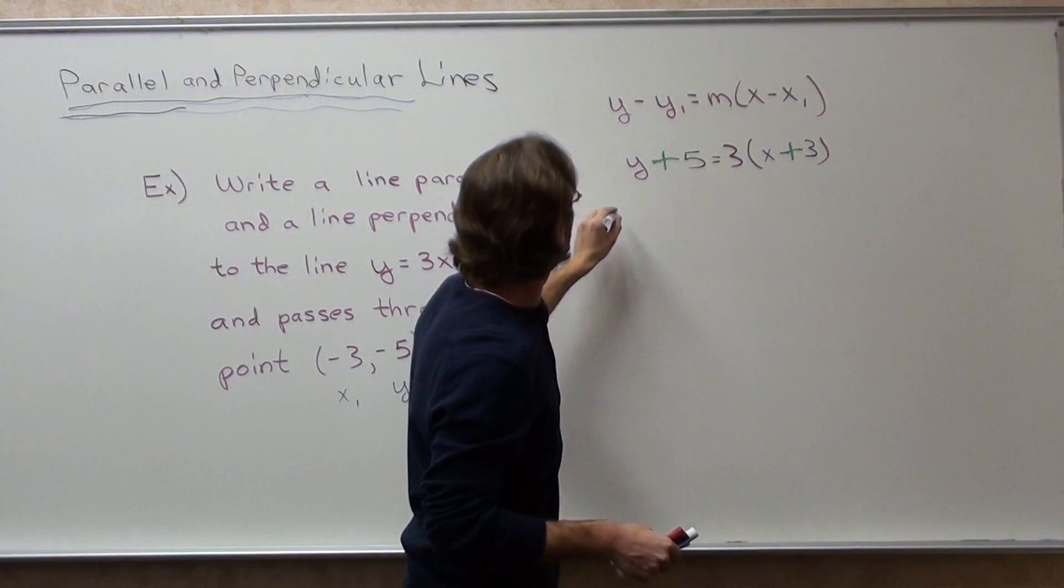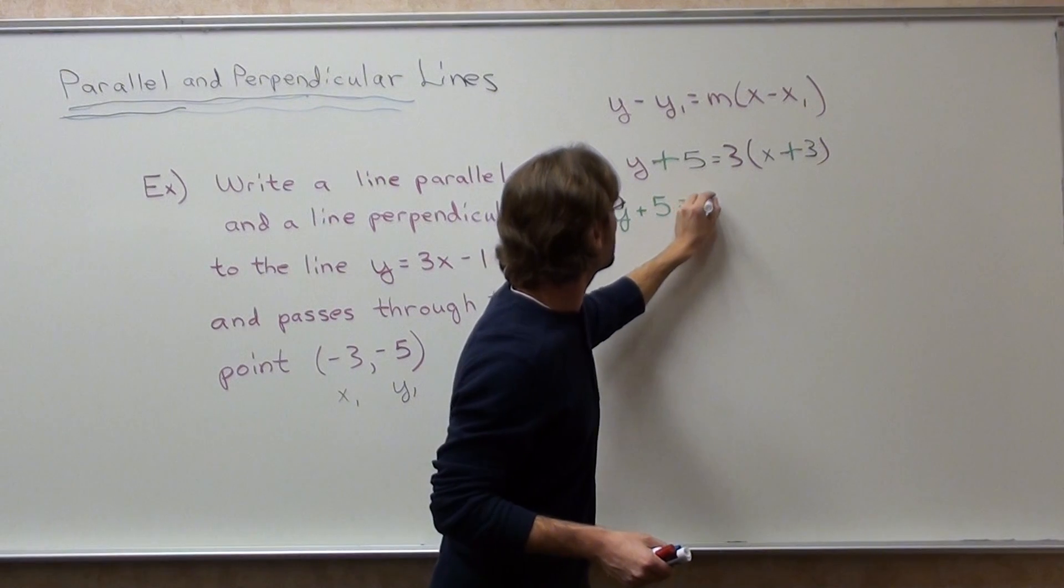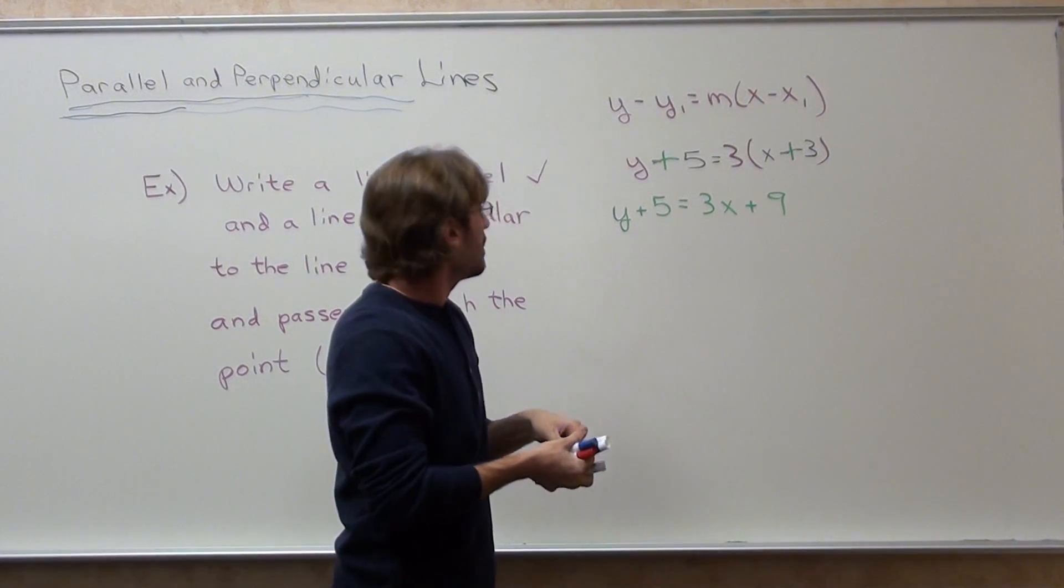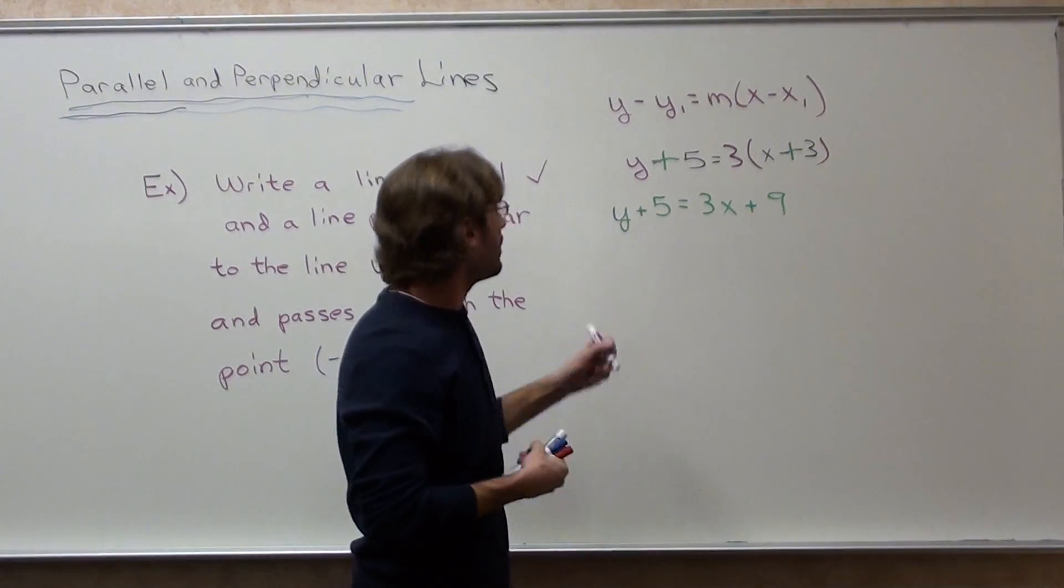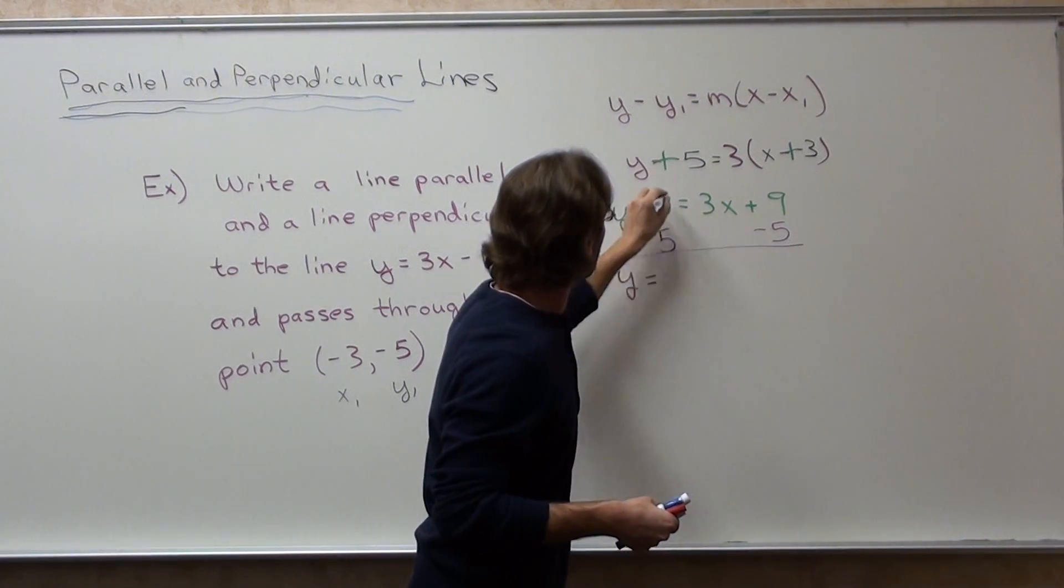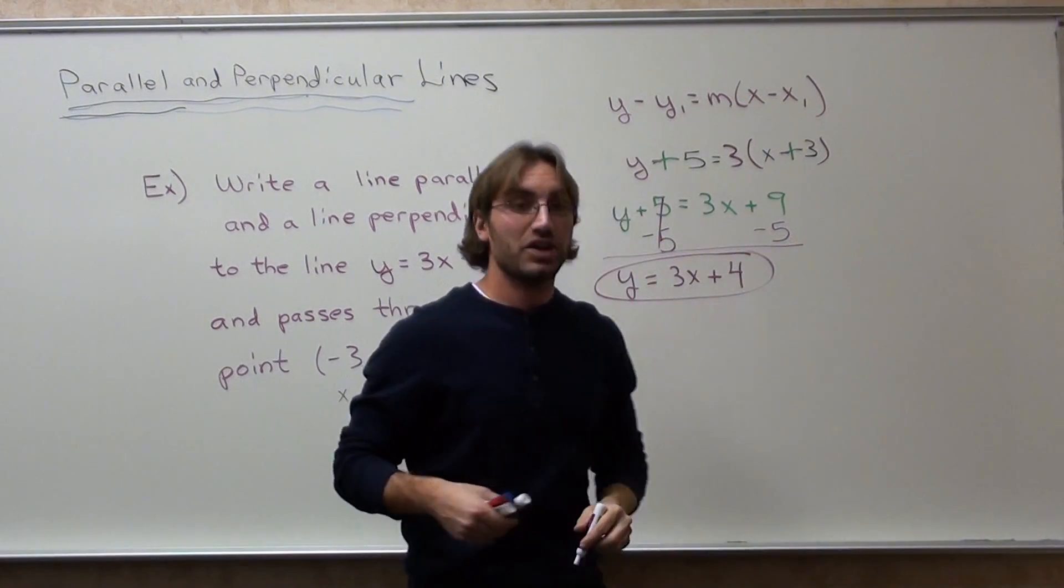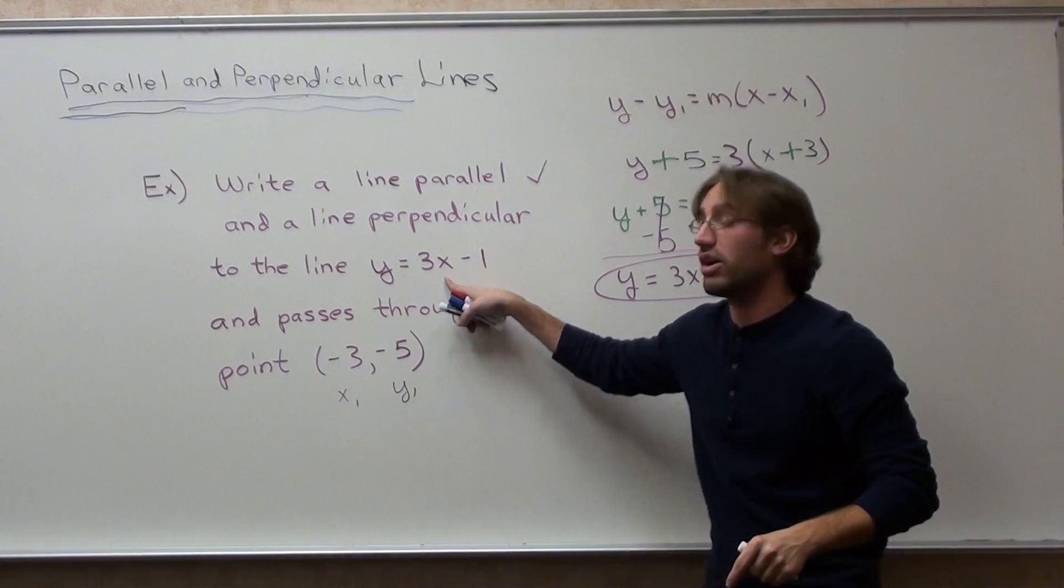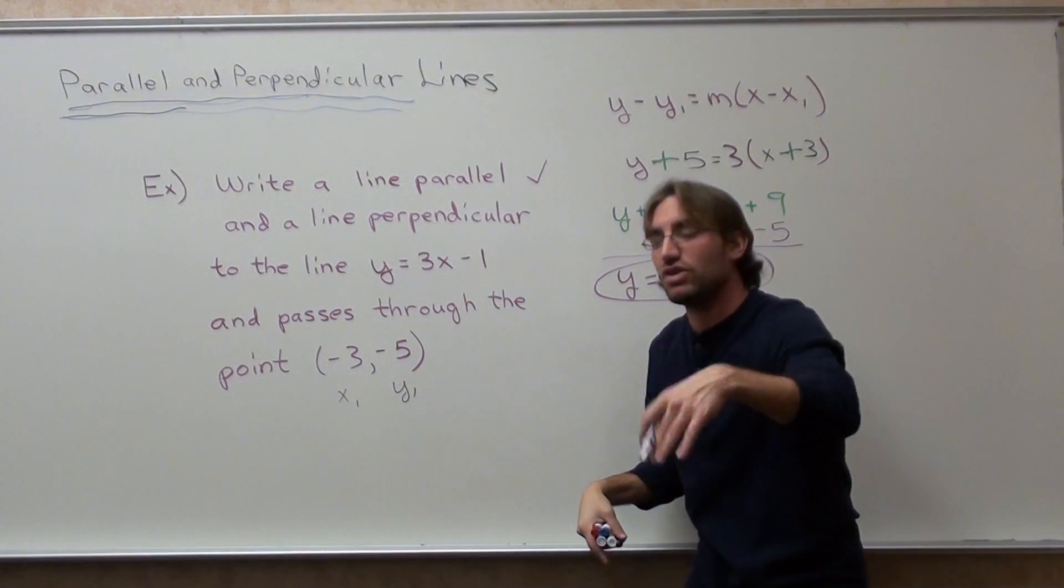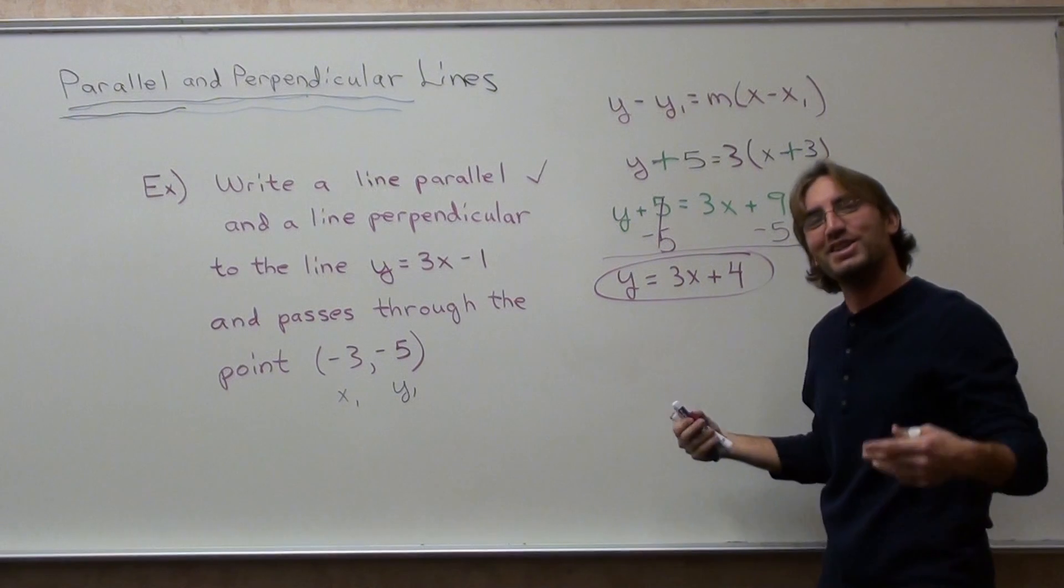Because I don't want to write it again. 3 times x is 3x. 3 times 3 is 9. Subtract 5 to get y by itself. There you go. You came up with a line that's parallel to this one. That will never touch it. That will never cross. And it's going to pass through this point. If you don't believe me, plug in this value right here into this equation and I promise you, it's going to work.